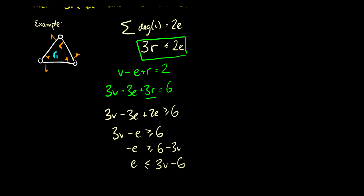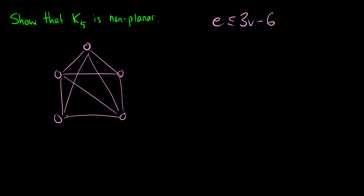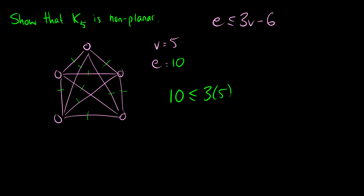Here is a result from Euler's theorem. We prove that K5 is non-planar, since E must be less than or equal to 3V minus 6 for any planar graph. K5 has five vertices and ten edges. So 10 has to be less than or equal to 3 times 5 minus 6, which is 9. We know 10 ≤ 9 is clearly not true. Therefore, K5 is non-planar.